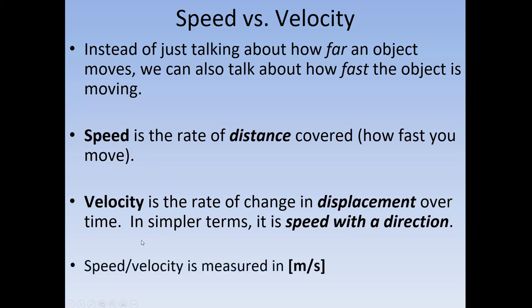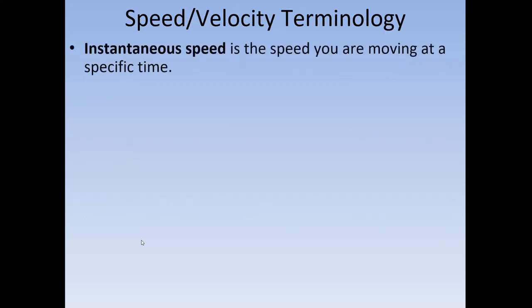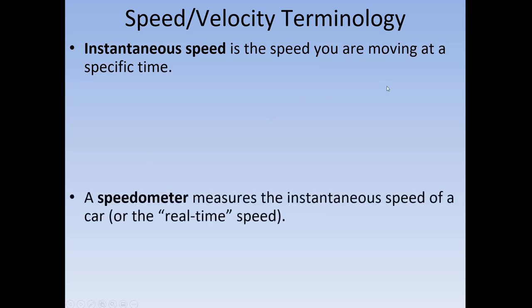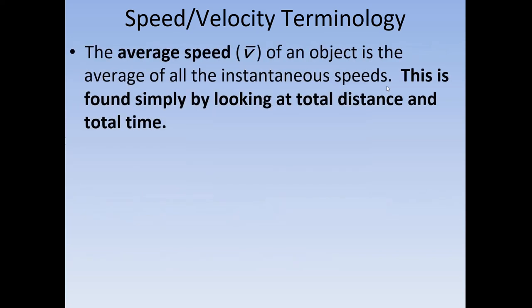Just like with distance and displacement, speed and velocity have the same units — both are measured in meters per second. Now, there are a few terminology points to cover. Instantaneous speed is the speed you travel at at some specific moment — essentially real-time speed, like what your car's speedometer reads. This refers to things like initial or final velocity.